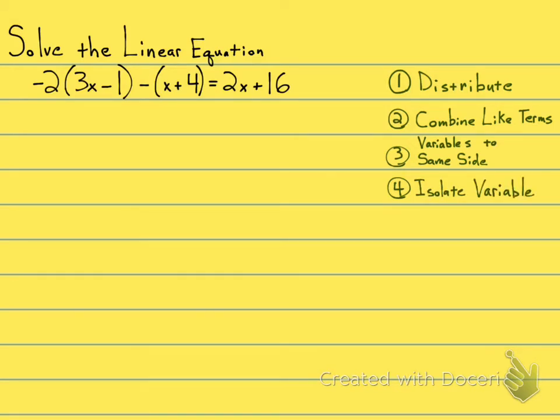So we see here that we do have an equation. It has an equal sign. And we see that it's linear because all of our exponents are 1. We don't have any exponents higher than that. So let's follow the steps.